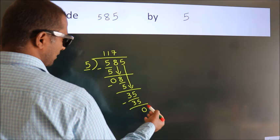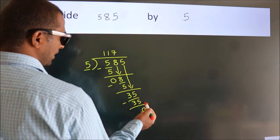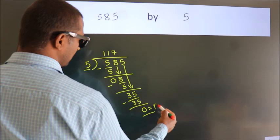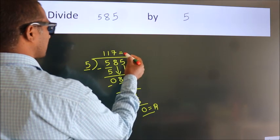After this, no more numbers to bring it down. So, we stop here. This is our remainder. This is our quotient.